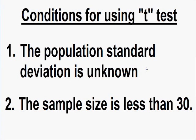The first condition is the population standard deviation is unknown. That is our first condition for using the T-test. Our population standard deviation, which is the Greek letter sigma, is unknown — we don't know what it is.